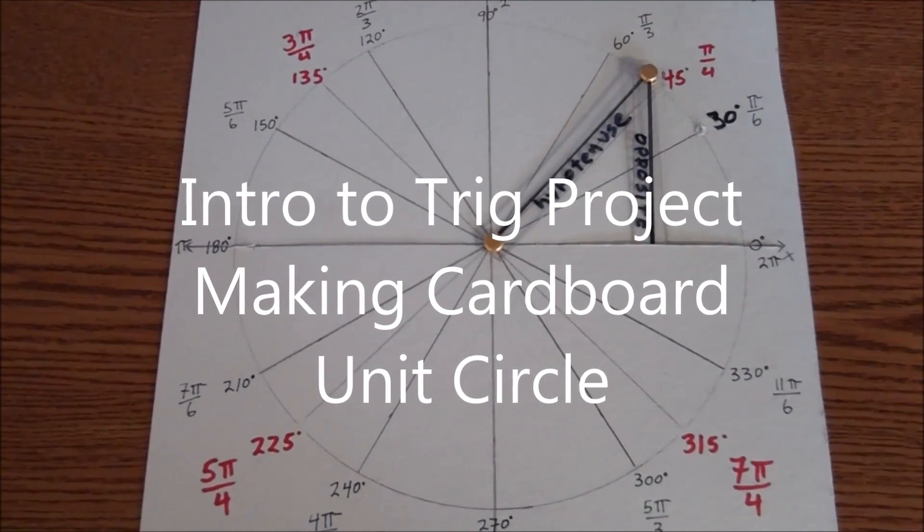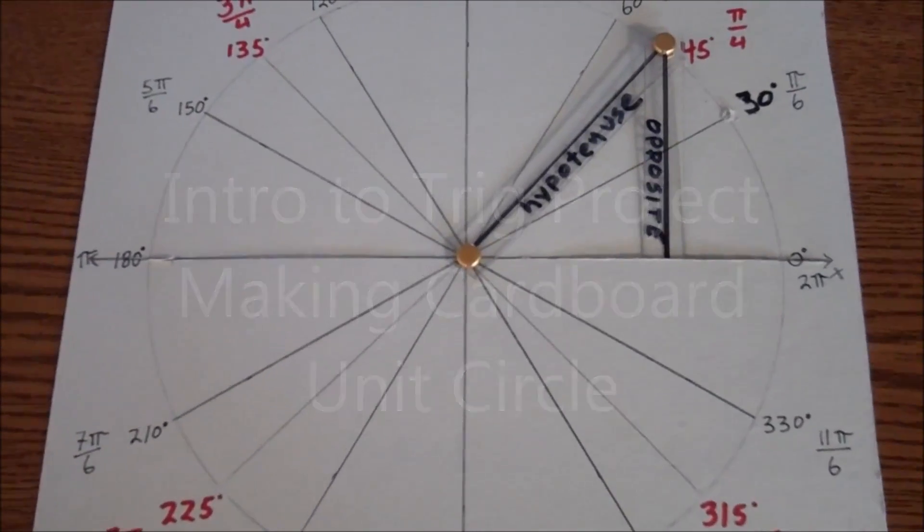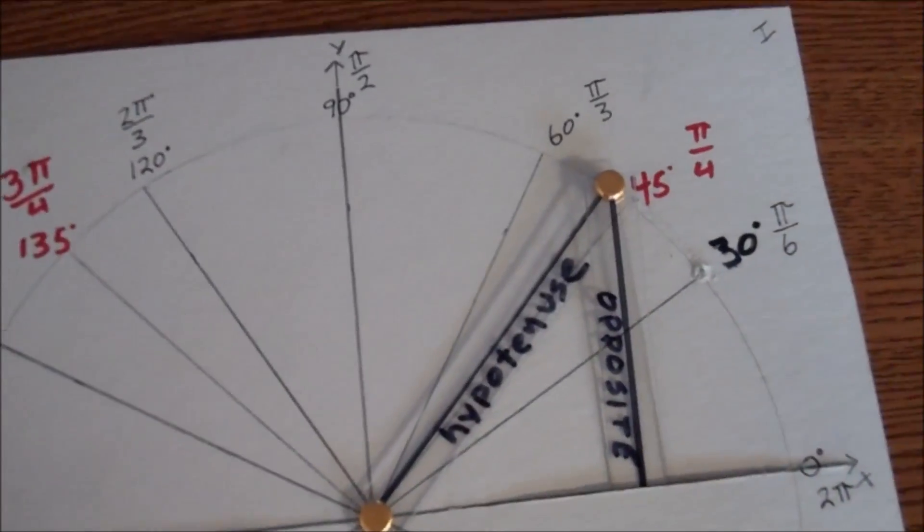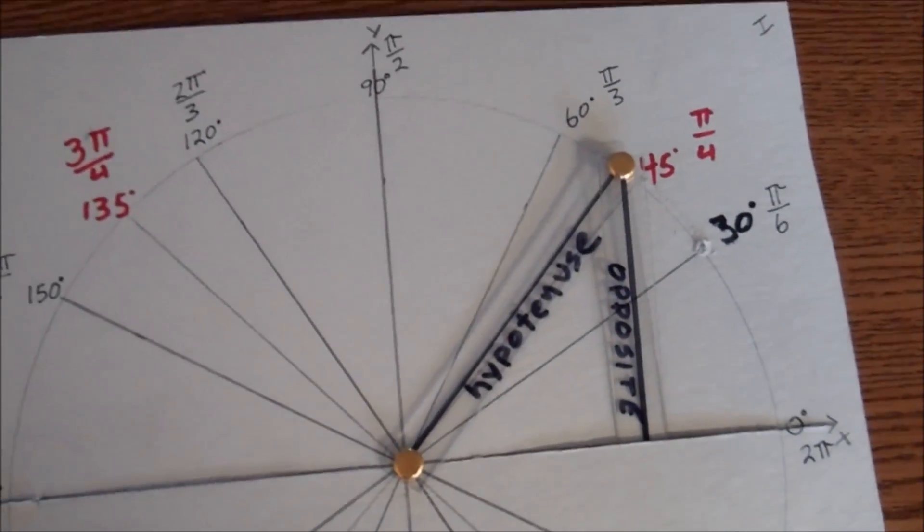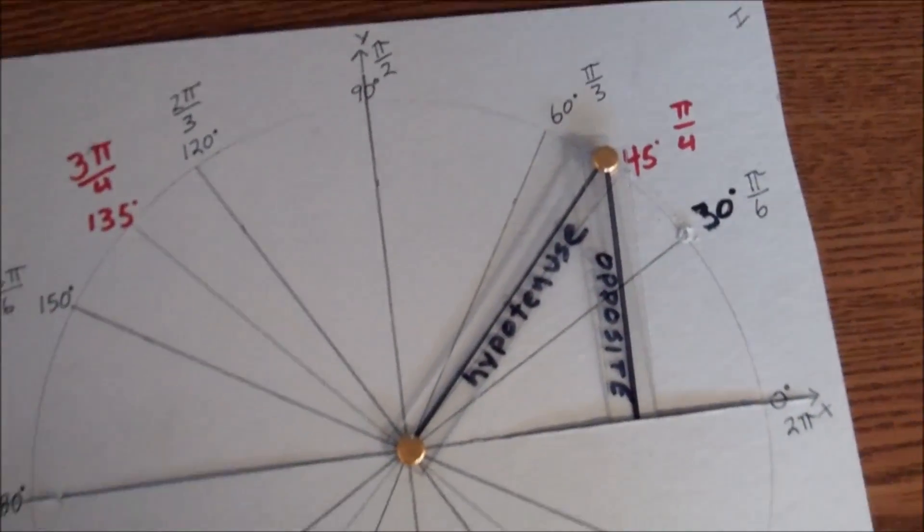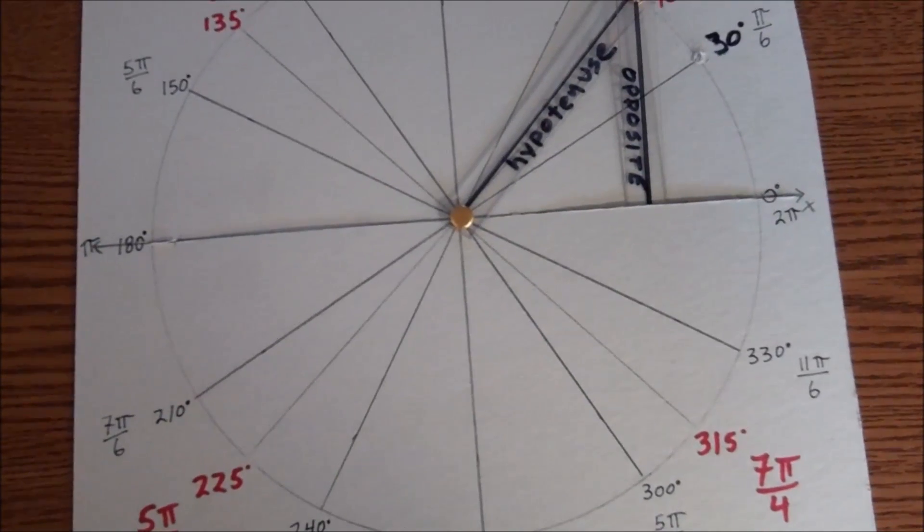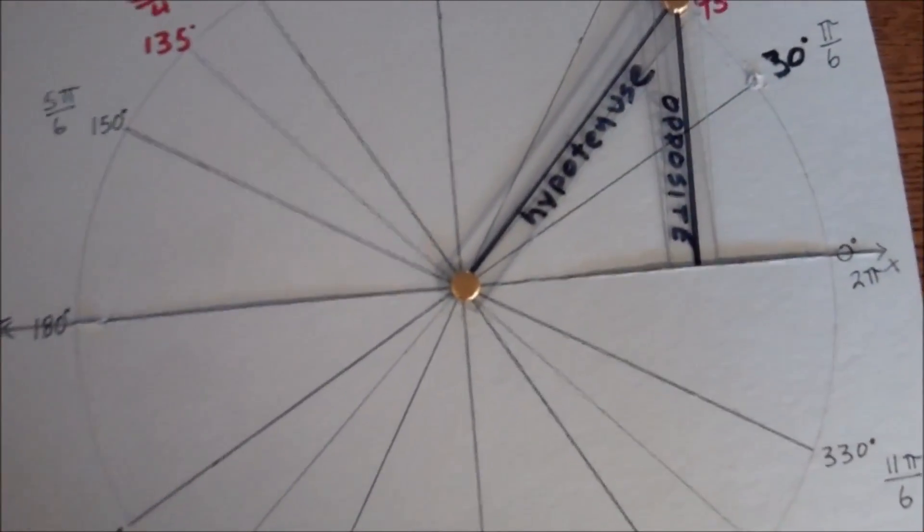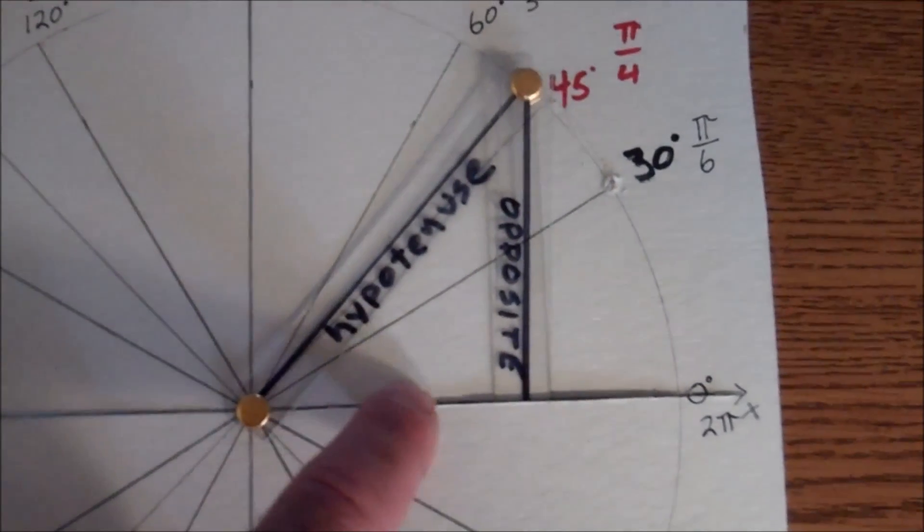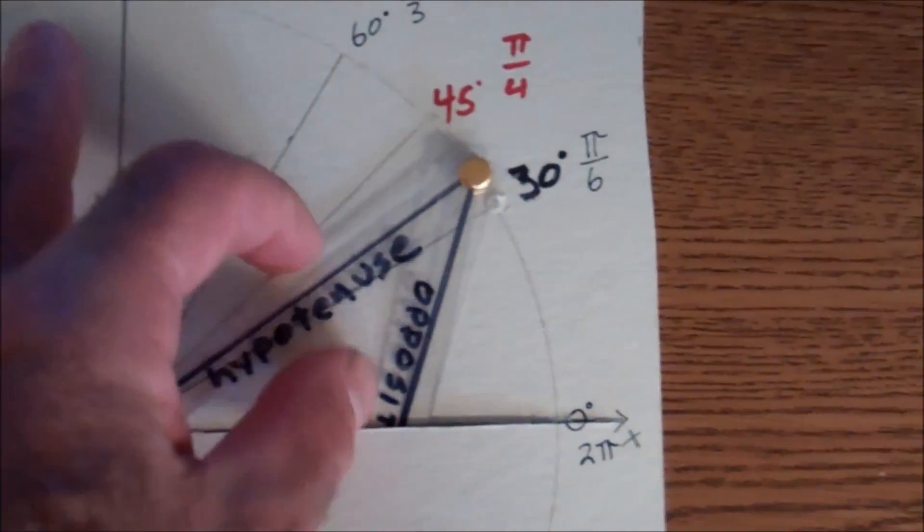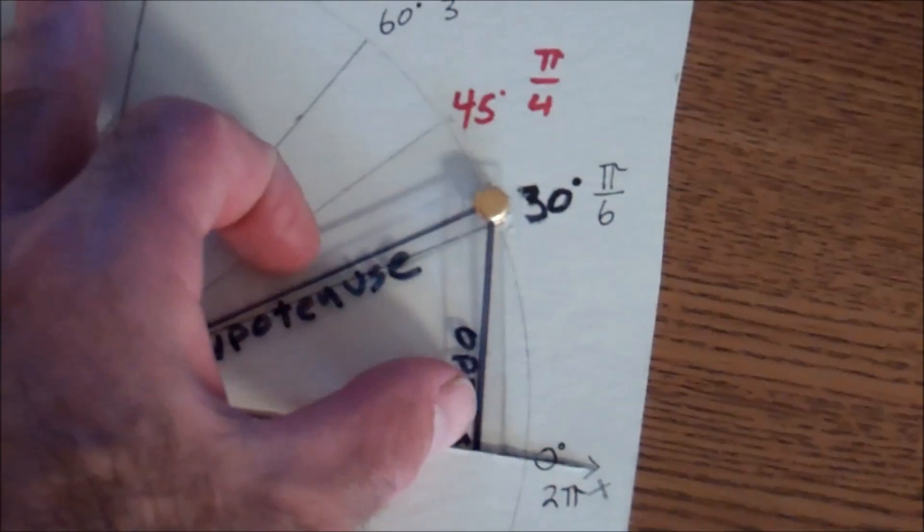Here's my unit circle project, made on a 10x10 square cardstock. I drew corner to corner to find my center, drew an 8-inch diameter circle, and then used brass fasteners to attach the arms. I cut along the x-axis here so my leg slides in there and I can create any one of my exact value triangles.